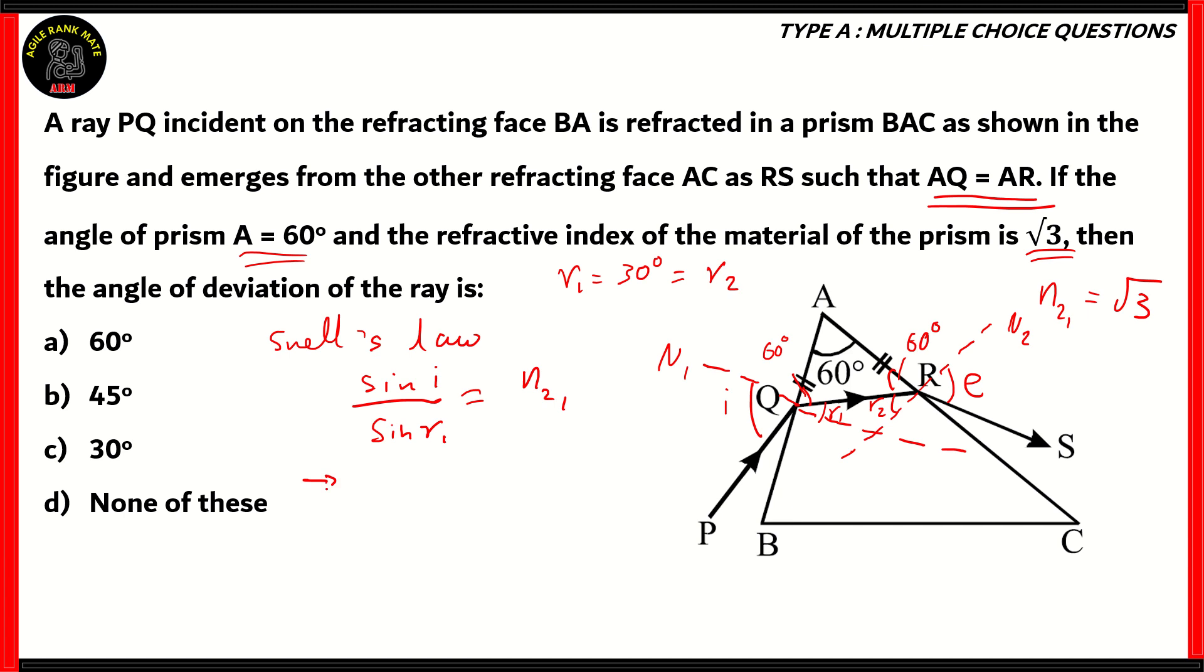So, when you put that in values, you get sin i divided by sin 30 as equal to root 3. So, we can put that here. Therefore, sin i equals root 3 times sin 30, which is 1 by 2. Therefore, sin i equals root 3 by 2. Therefore, sin i equals sin 60 degrees. So therefore, the angle of incidence is equal to 60 degrees.